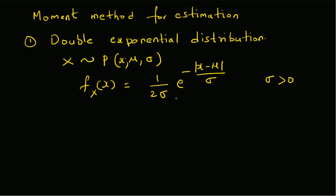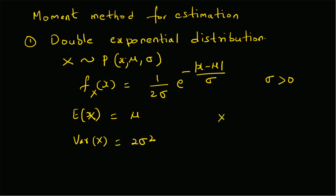From theory, we know that the mean of this distribution — that is, the expectation of x — is given by mu, and the variance of this random variable is given by two times sigma squared.